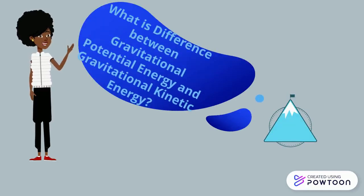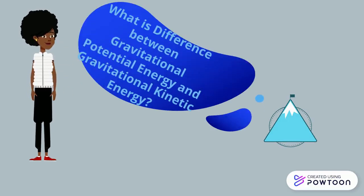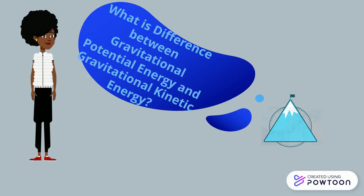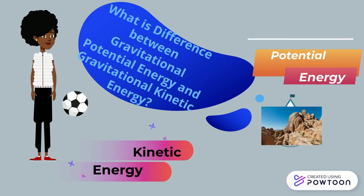We will explore the difference between gravitational potential energy and gravitational kinetic energy. Potential energy is stored energy, like a rock on a mountain. Kinetic energy is energy in motion, like the bouncing ball.